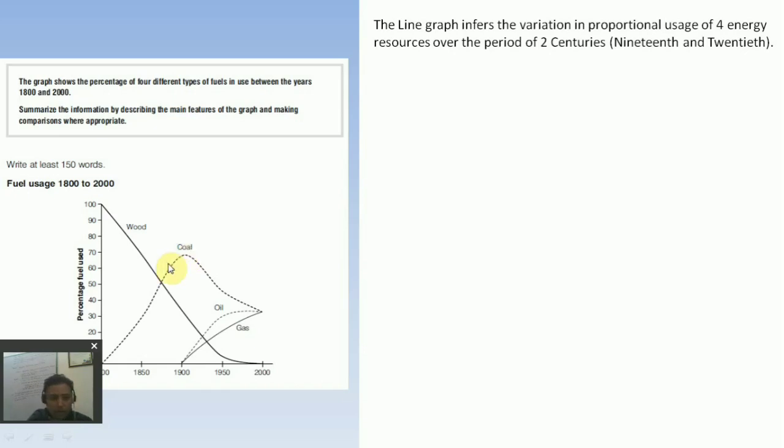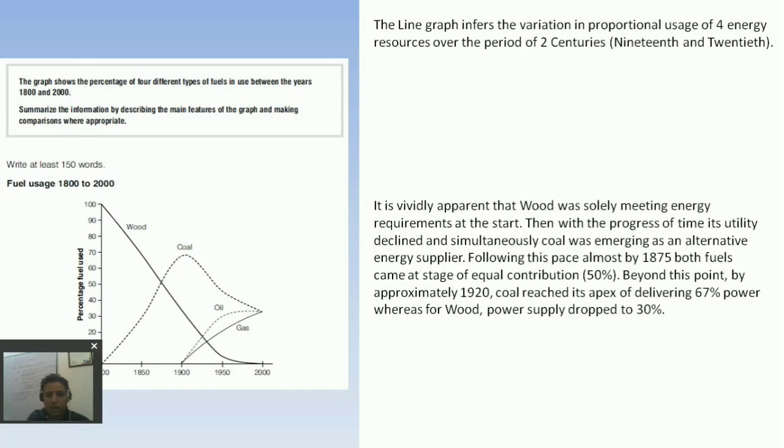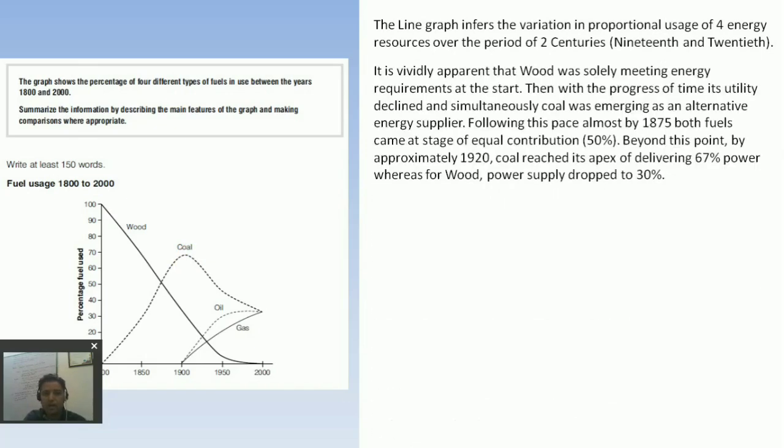In year 1800 new fuel as an alternative, coal, was introduced and with the passage of time its consumption increased. This is body paragraph. It is vividly apparent that wood was solely meeting energy requirement at the start. Then with the progress of time its utility declined and simultaneously coal was emerging as an alternative energy supplier.